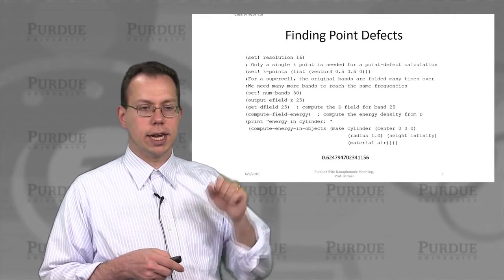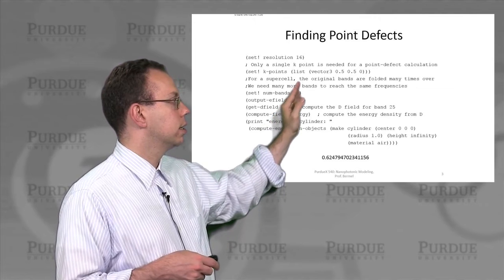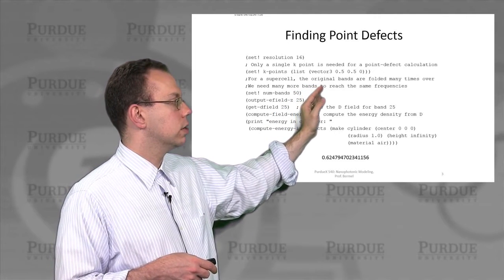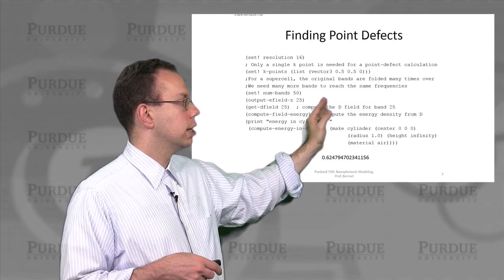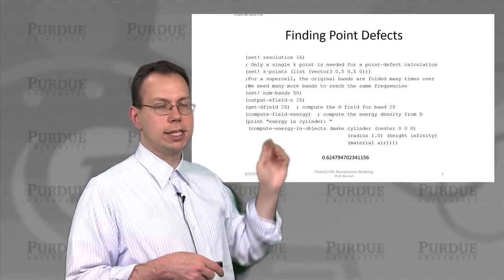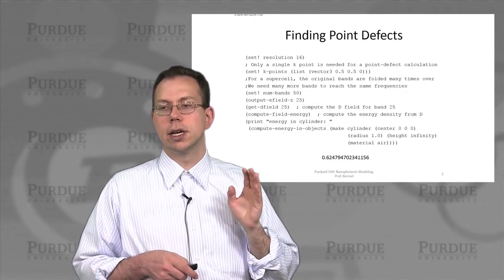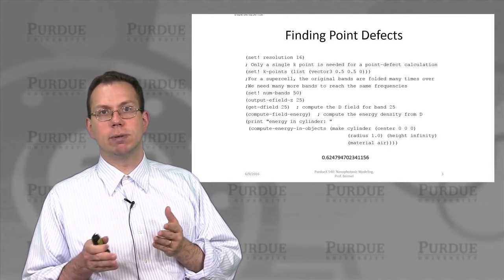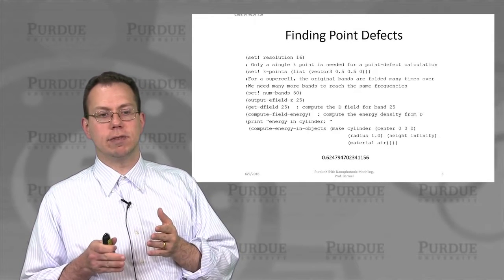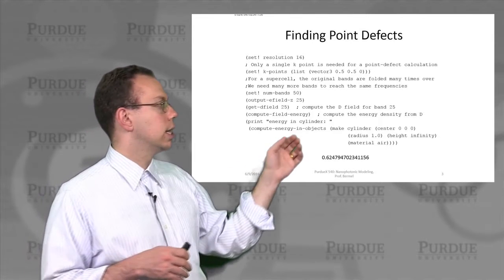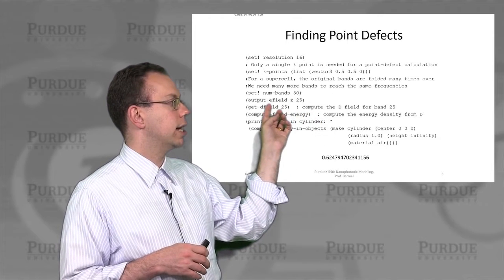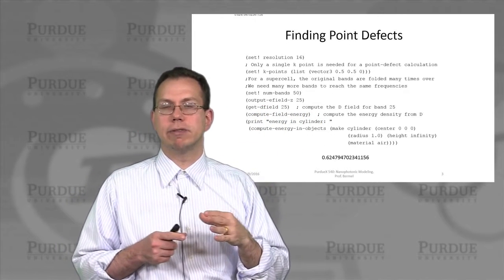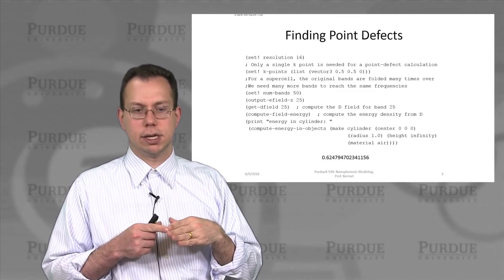We only need a single K point. Then we choose a very large number of bands — probably at least 50 — because many bands are going to be folded over due to the 5 by 5 supercell. We can expect that the 25th state, since it's a 5 by 5 superlattice, will be our defect state.